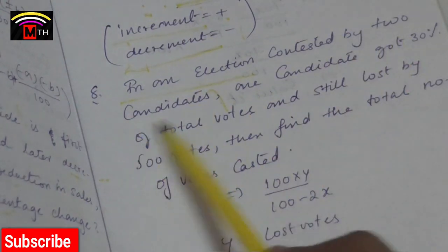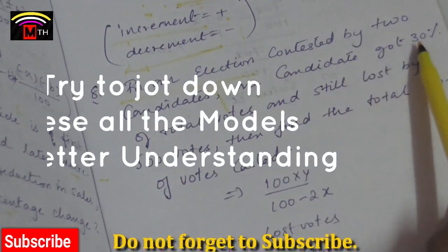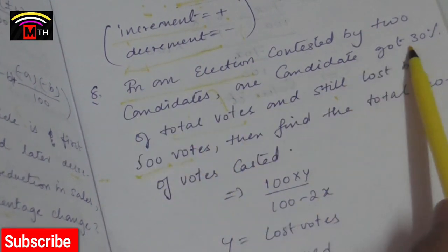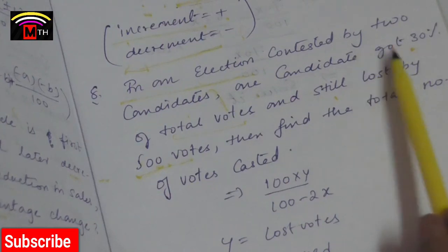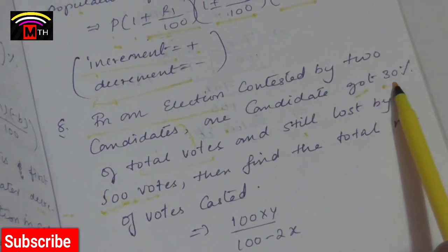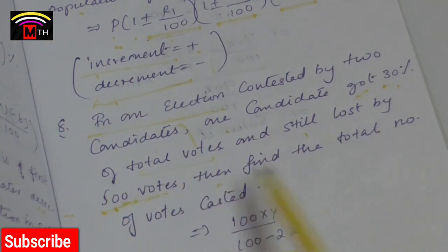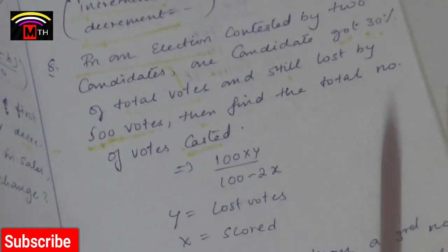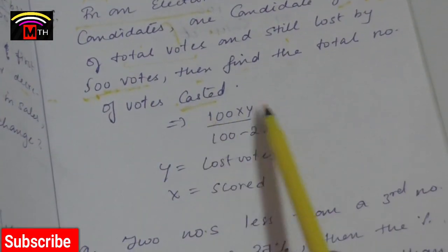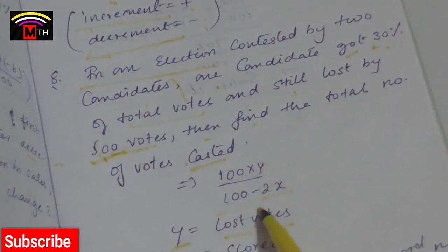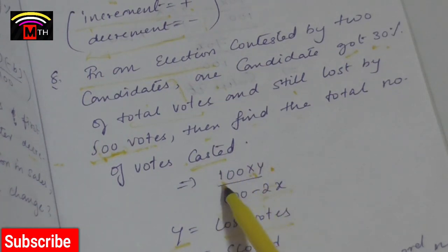Election model: an election is contested by two candidates. One candidate got 30 percent votes and lost by 500 votes. Find the total number of votes cast. The formula is 100 into Y by 2X, where Y is the lost votes margin. Substituting the values gives the total number of votes.